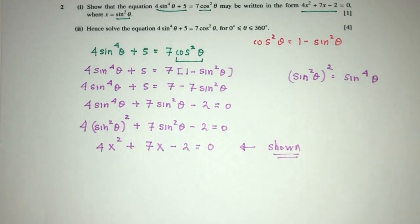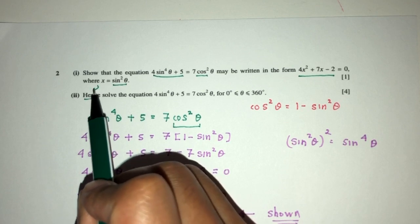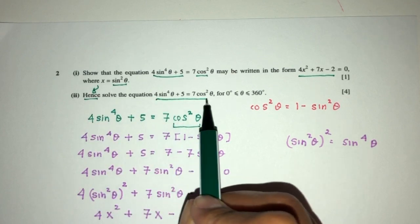That is part 1 of the question. Okay, pretty easy, not too bad. Now, for part 2, hence we have to solve the equation. Hence, it means we have to use part 1 to solve this equation. Okay, pretty easy.